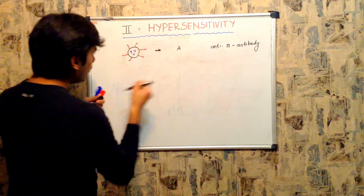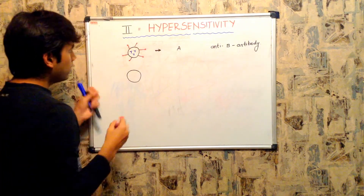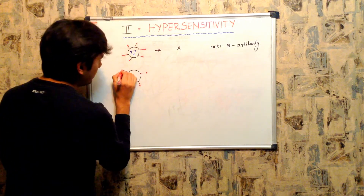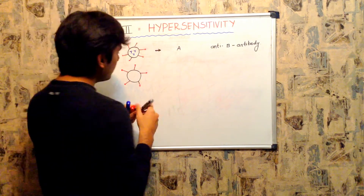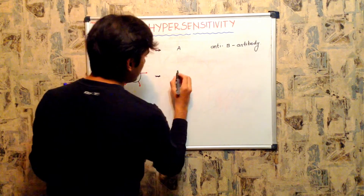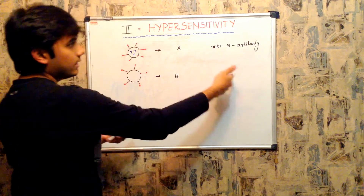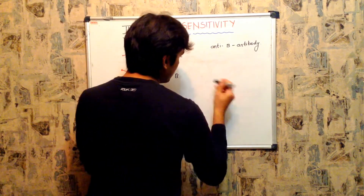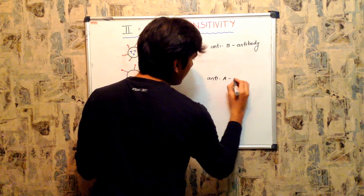When we look at another individual with a different blood group, we find that the surface antigens are of type B. Obviously, the antibodies in this case will be type A — anti-A antibodies.